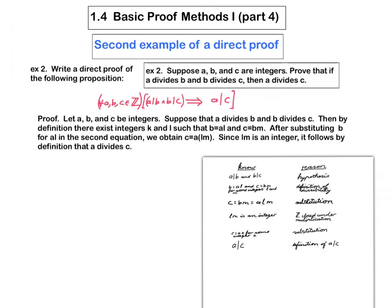All right, so here's the complete proof. So it's routine that the first sentence has to be: let A, B, and C be integers. So that comes from this thing here. And it's also routine that the second sentence should come from here. It should say, suppose that A divides B and B divides C.